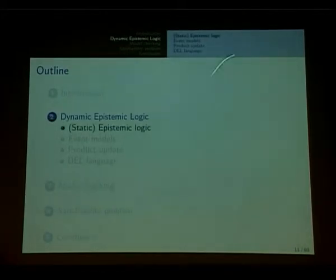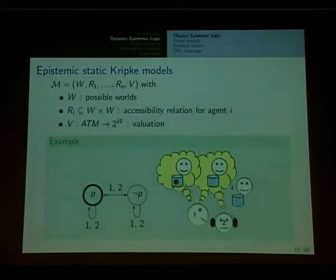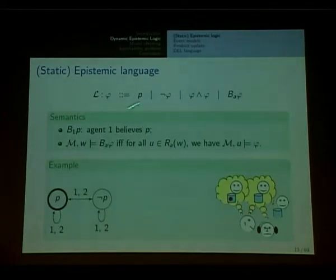I will start with static epistemic logic, then introduce event models, product update, and the dynamic epistemic language. The running example is as follows: there are two agents and a box with a ball inside. You know there is a ball inside because this is the initial world, but the two agents don't know anything. For them, there are two possible worlds: one where the ball is inside, and one where it is not. We use the traditional epistemic logic language with the modal operator: A believes phi.